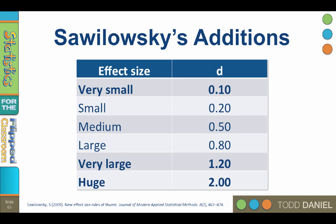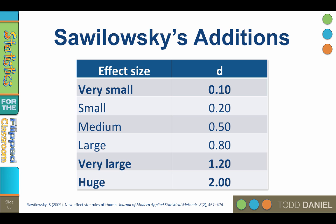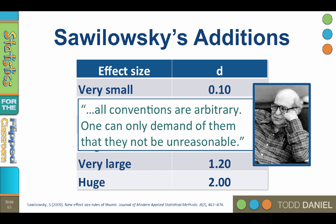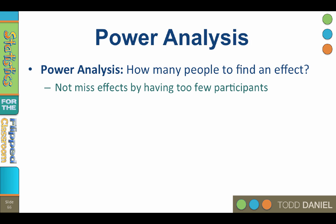Another researcher expanded Cohen's conventions to include very small at 0.1, very large at 1.2, and huge at 2.0. Cohen's conventions, while still arbitrary, are not at all unreasonable. Don't get hung up on categorizing a d of 0.78 as medium or large — it is what it is, and it can be directly interpreted. When we know the effect size, we can figure out how many people we would need in our experiment to find an effect of that size. This is called a power analysis. It helps us choose a large enough sample that we are likely to find any differences that exist, and to not waste time and money by having too few participants.